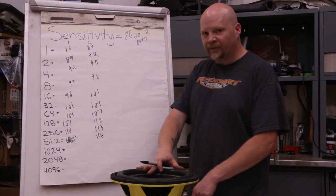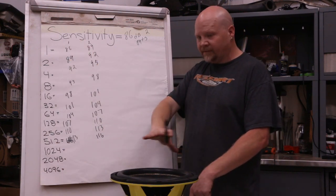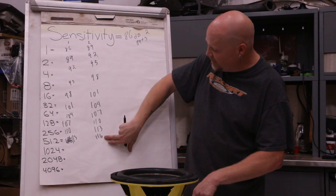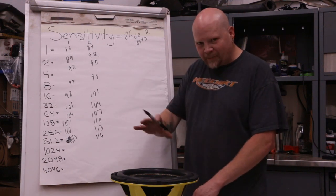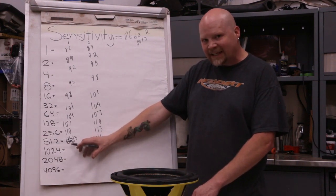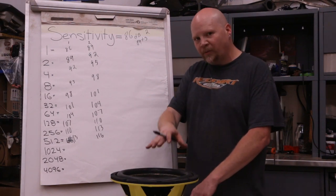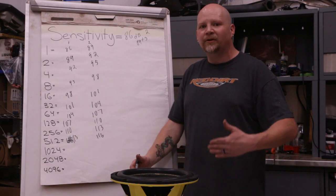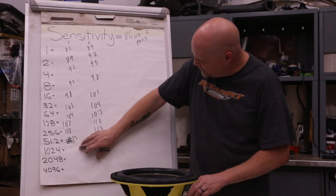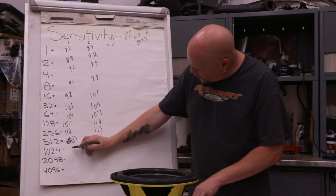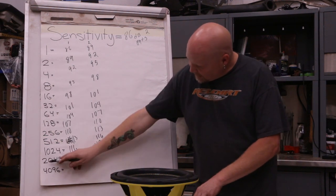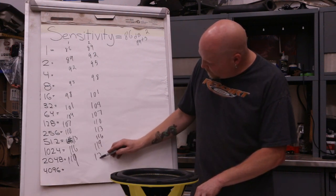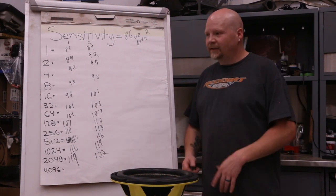We're going all the way up to 2,048 watts. At 500 watts, one subwoofer is at 113 dB and two subwoofers at 116 dB - that's pretty typical for people starting out. But to get louder with this subwoofer you're going to have to double your power from 500 to 1,000 watts. There's not much point going from a 500-watt amp to a 750-watt amp if you want to be louder - it's just not going to make that much difference. At 1,000 watts: 116 and 119 dB.